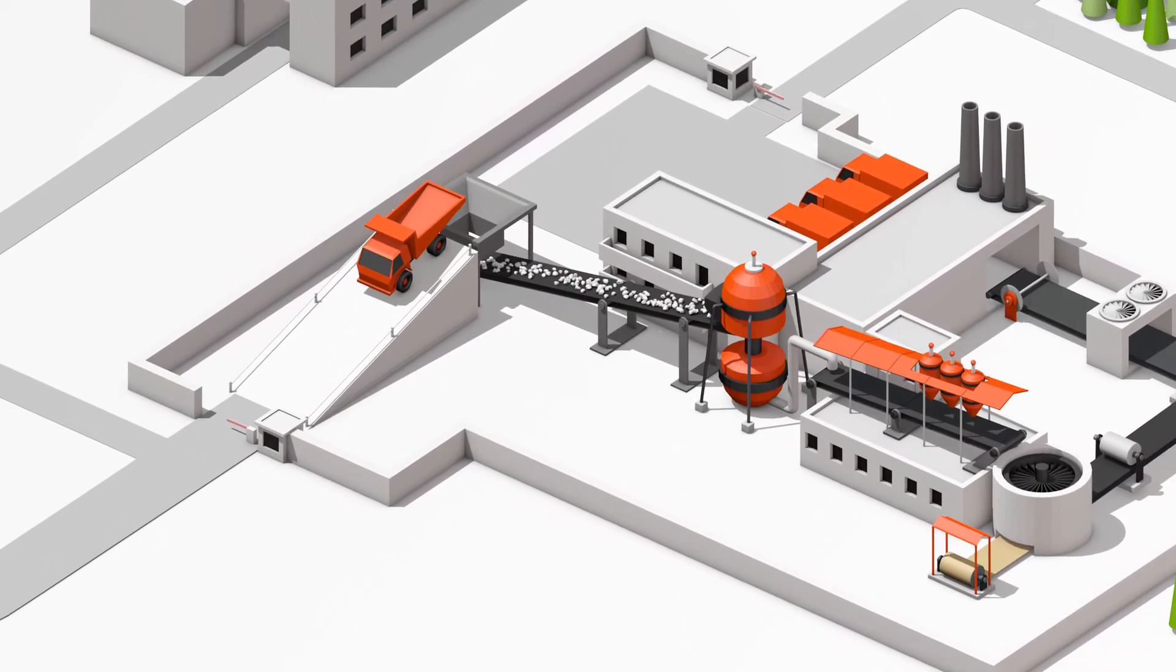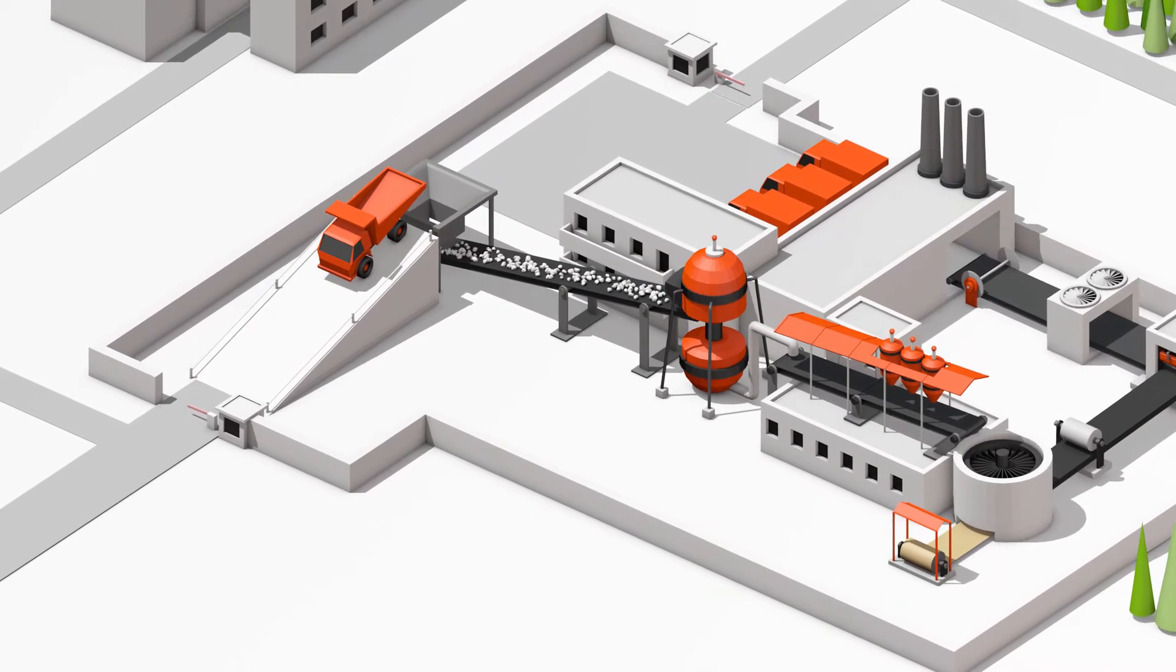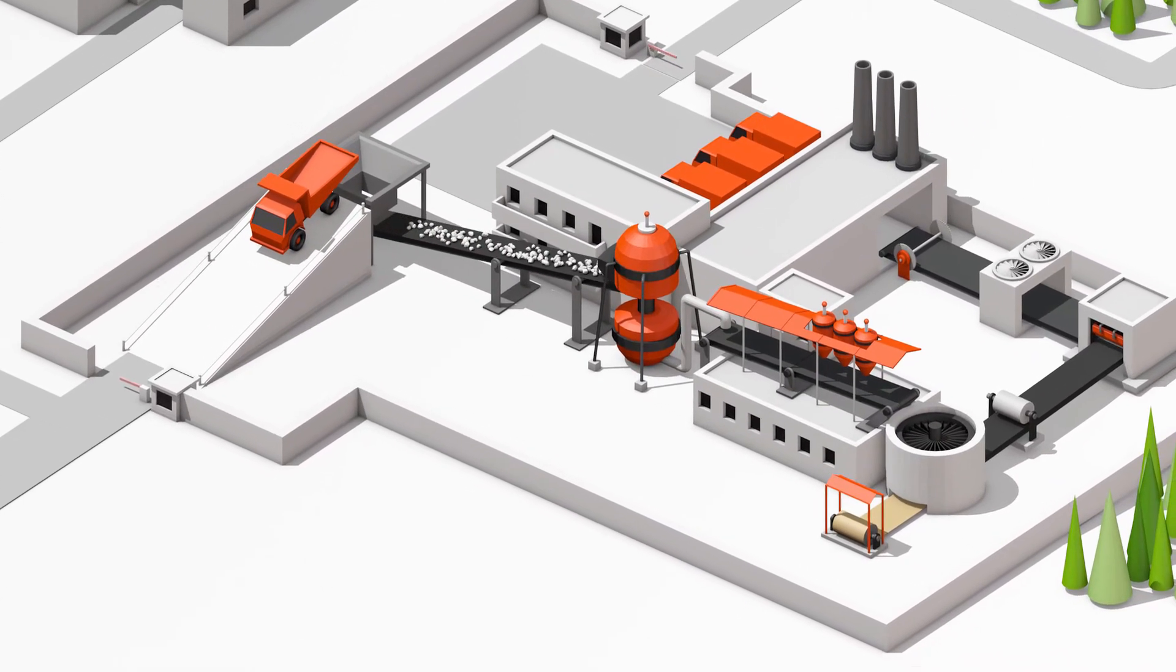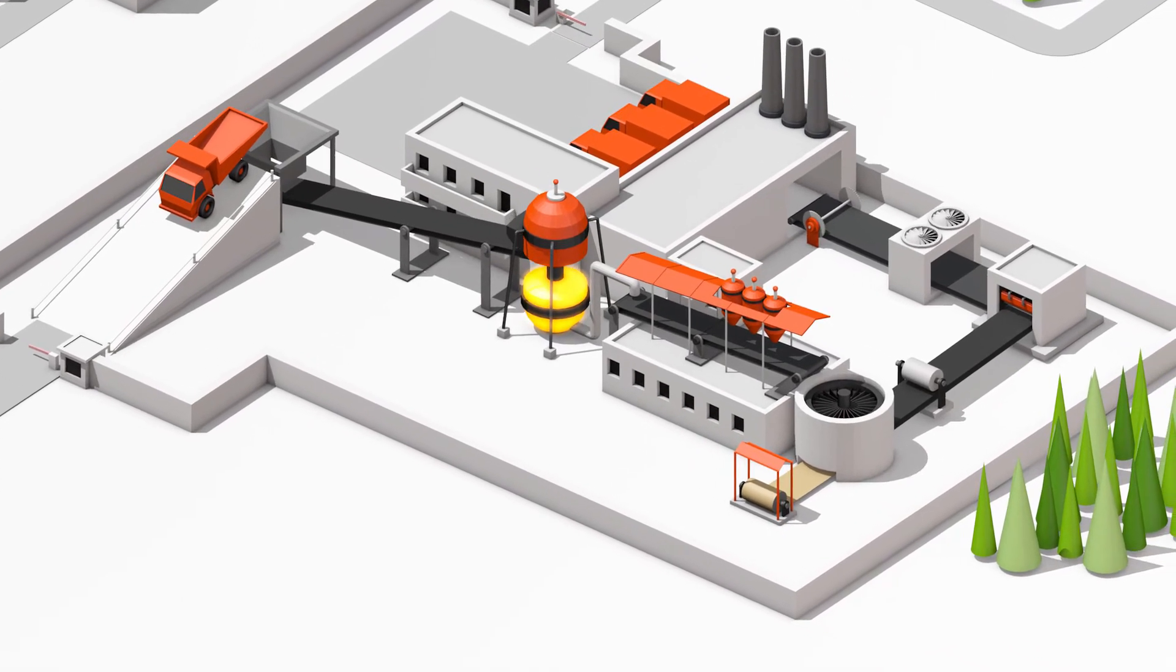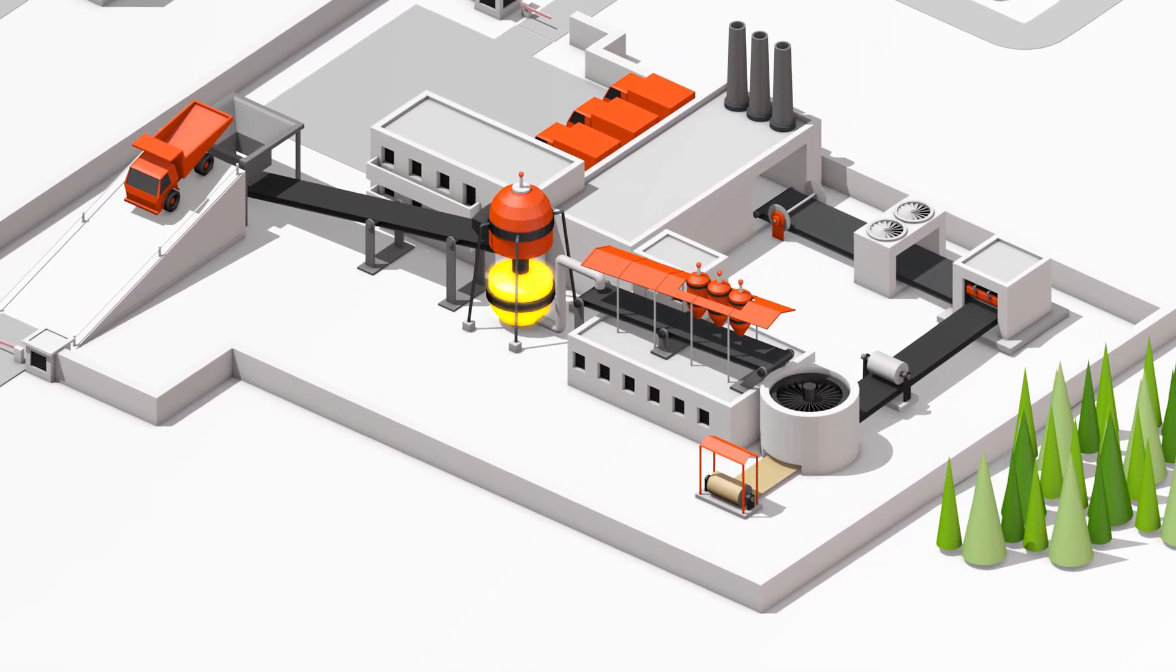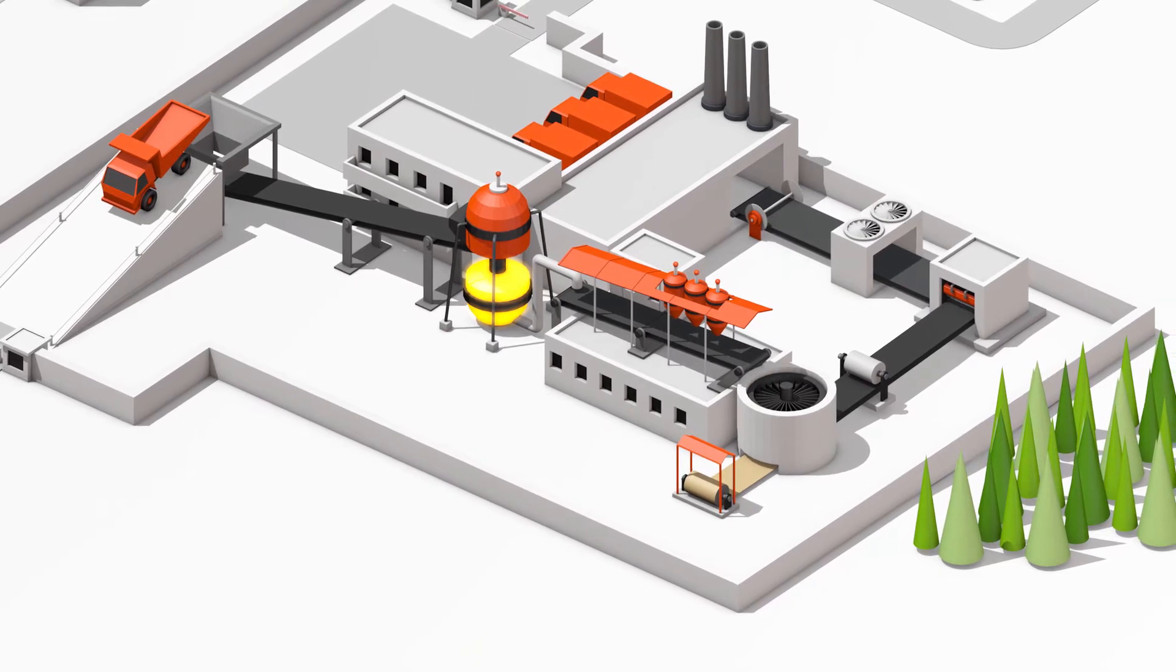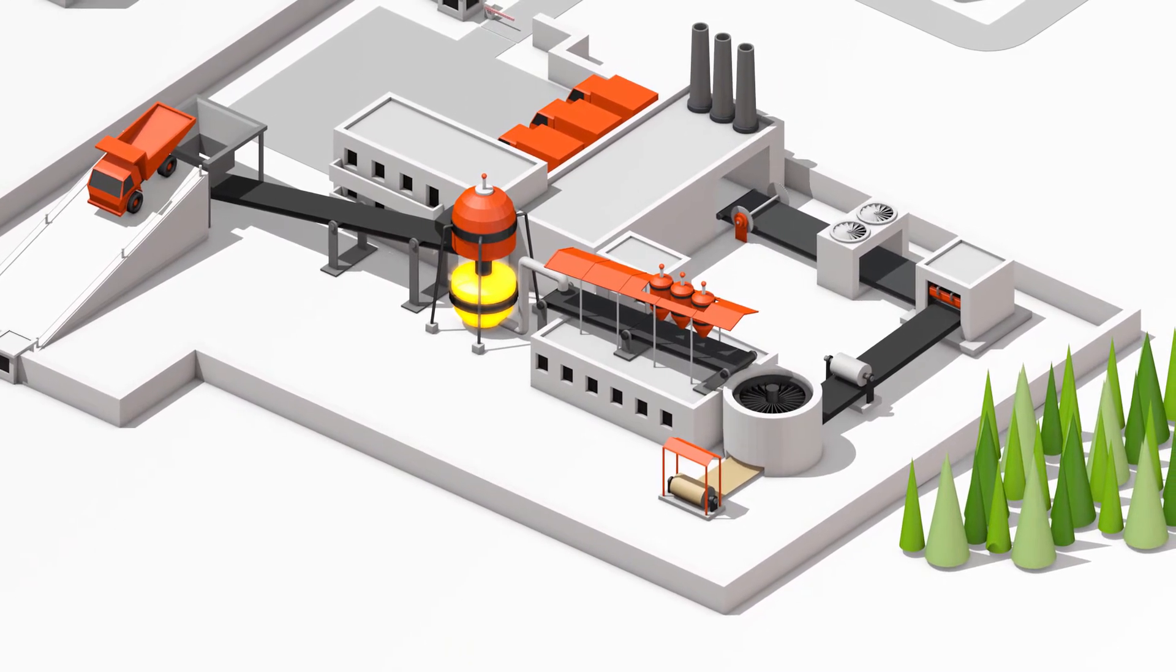The grinding mill turns the gypsum into a very fine powder, smaller than a tenth of a millimetre in diameter. Afterwards, the gypsum is heated to 150 degrees Celsius. Once all the water content is removed from the gypsum, it turns into plaster.